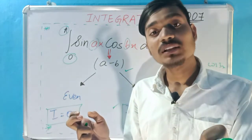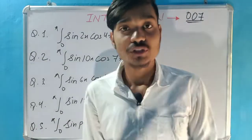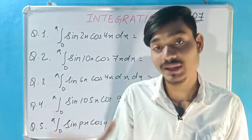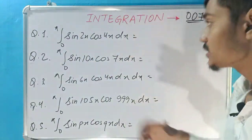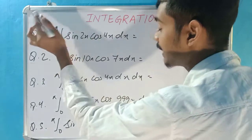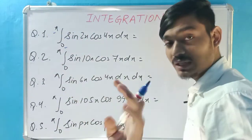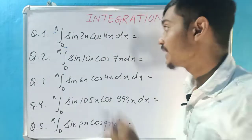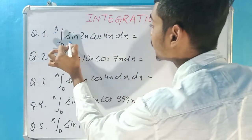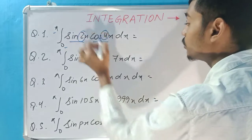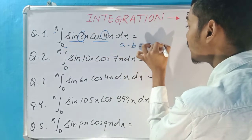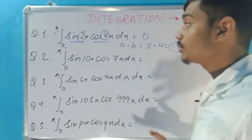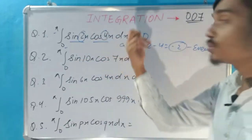The formula is 2a divided by a squared minus b squared. If the difference a minus b comes out to be odd, we use this formula: 2a over (a² − b²). If the difference a minus b comes out to be even — whether it is 0, positive, or negative — the integral comes out to be 0. So if a minus b is even, the answer is simply 0.